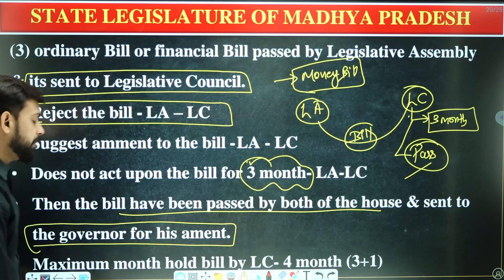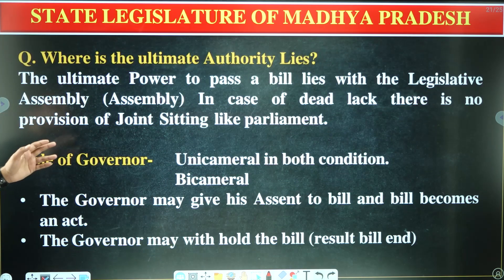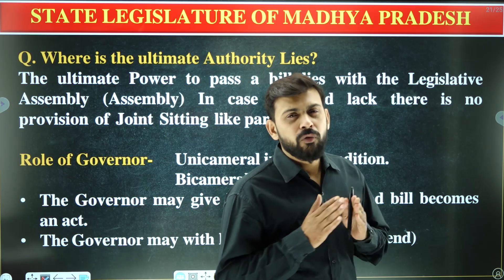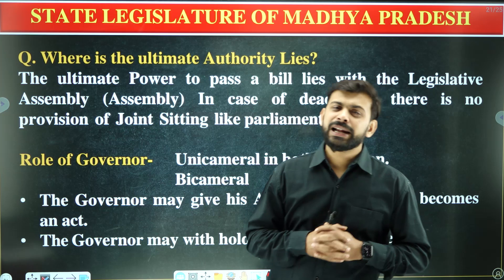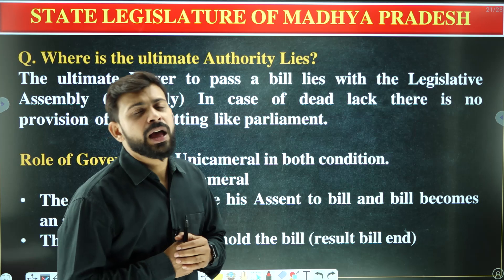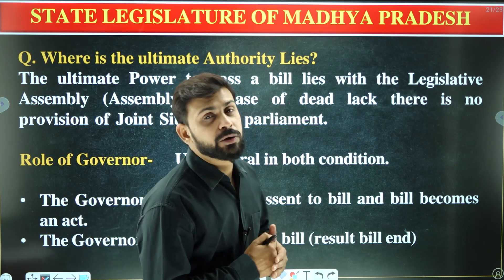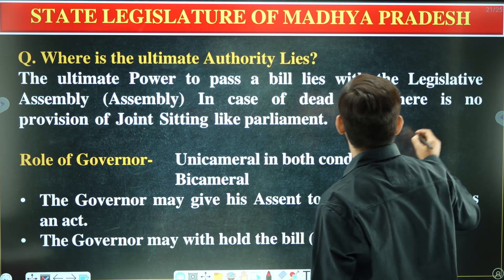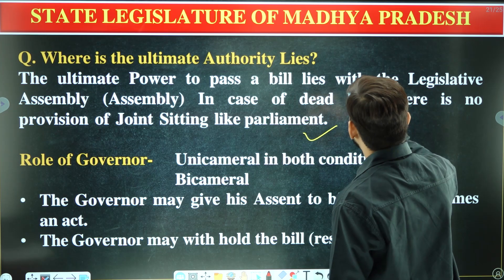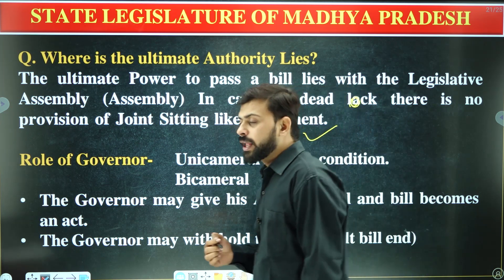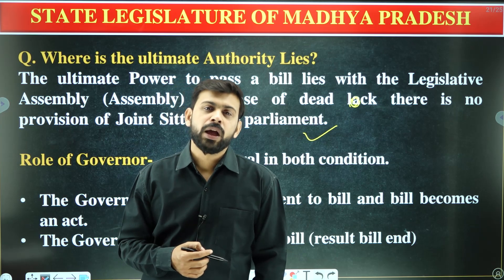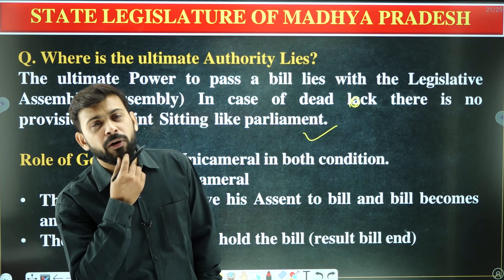The bill is sent to the Governor after being passed by both houses. The ultimate authority lies with the legislative assembly. In case of a deadlock, there is no provision for a joint sitting of both houses, unlike in Parliament.